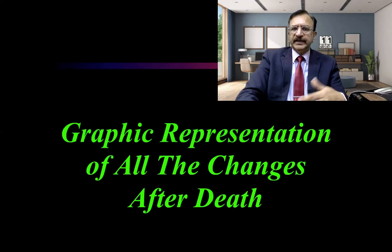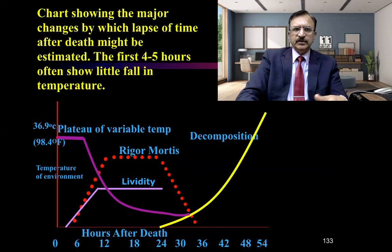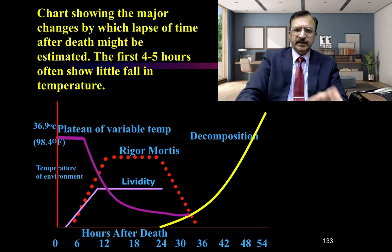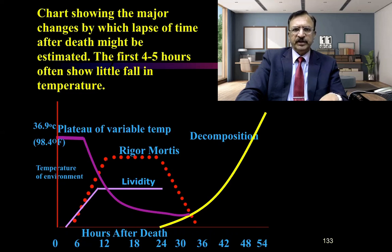Now, the graphic representation of all the changes after death. This is a diagram showing the plotted graphs of all the changes — the post-mortem staining, the cooling of the body, the rigor mortis, and the post-mortem putrefaction — all plotted on one graph showing all changes together.